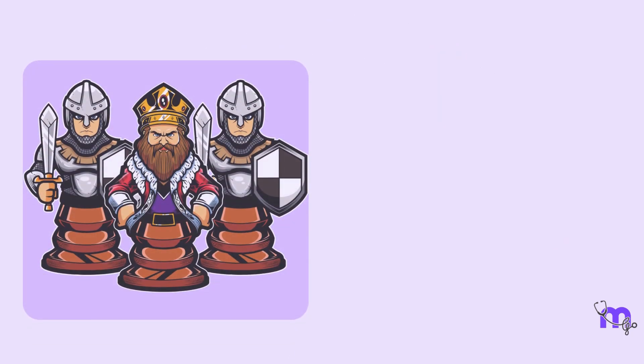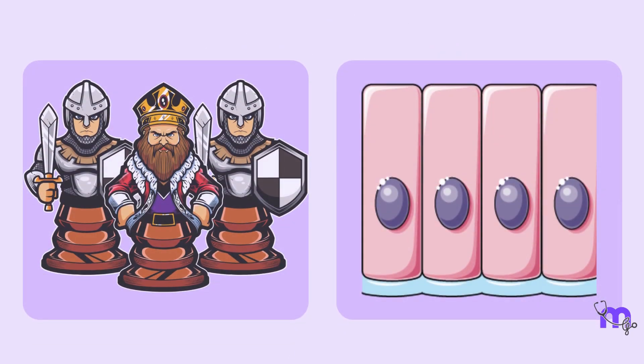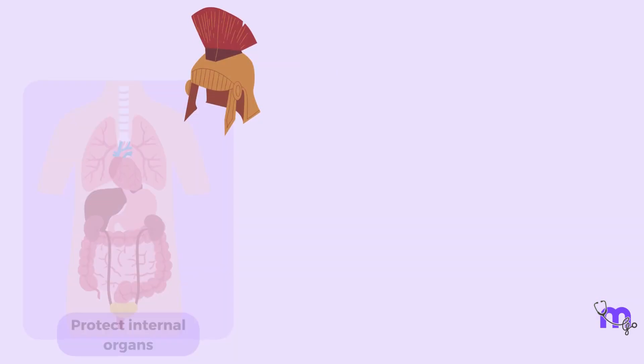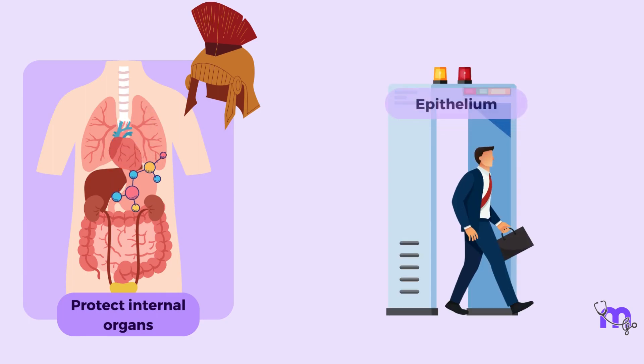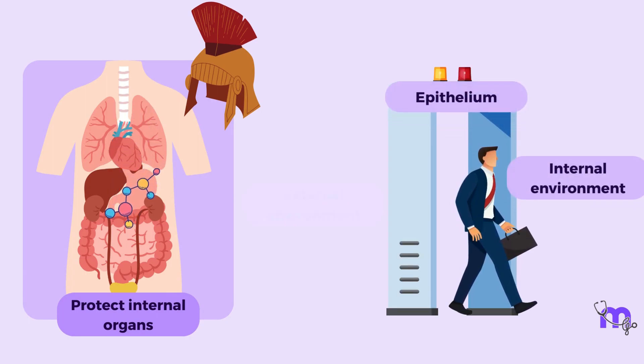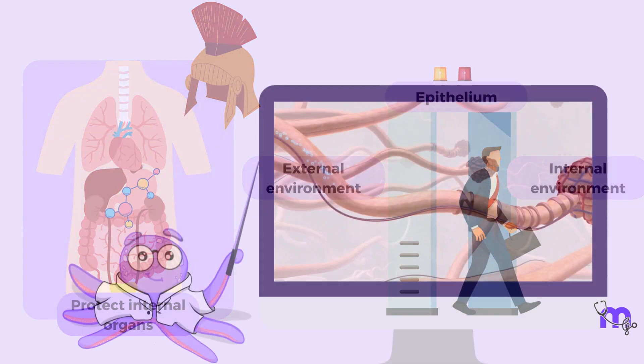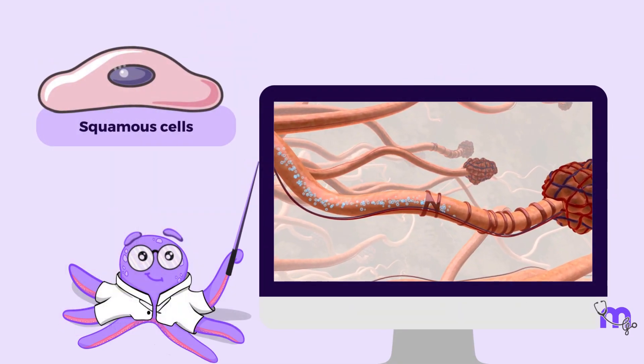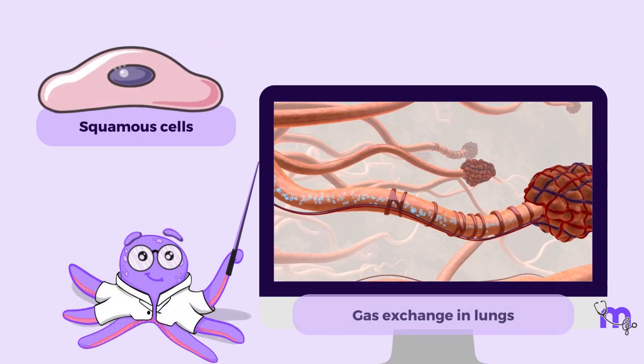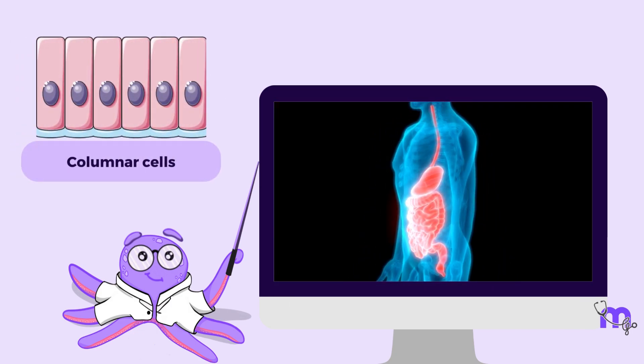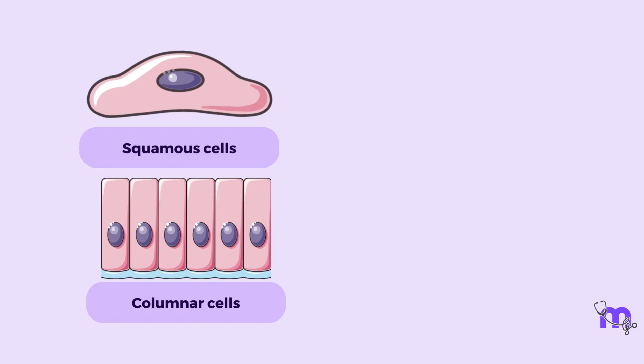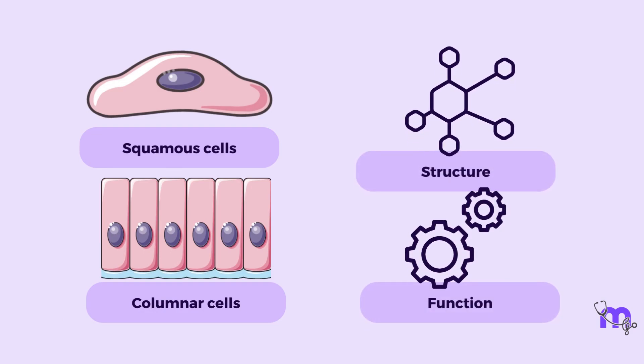Like skilled sentinels, the epithelial tissues form cellular barriers that shield our organs, absorb nutrients, and act as gatekeepers between our internal and external environments. From the simple squamous cells facilitating efficient gas exchange in our lungs through the complex columnar cells that line our digestive tract, each epithelial cell type has a unique structure and function that contribute to our overall well-being.